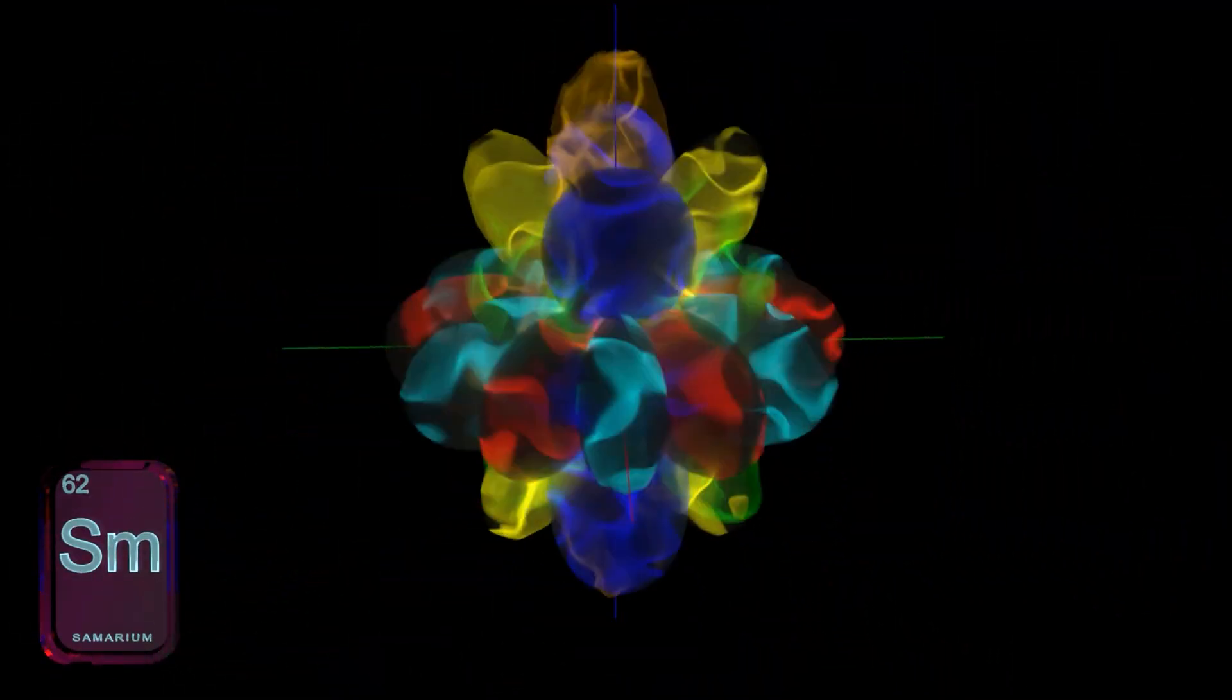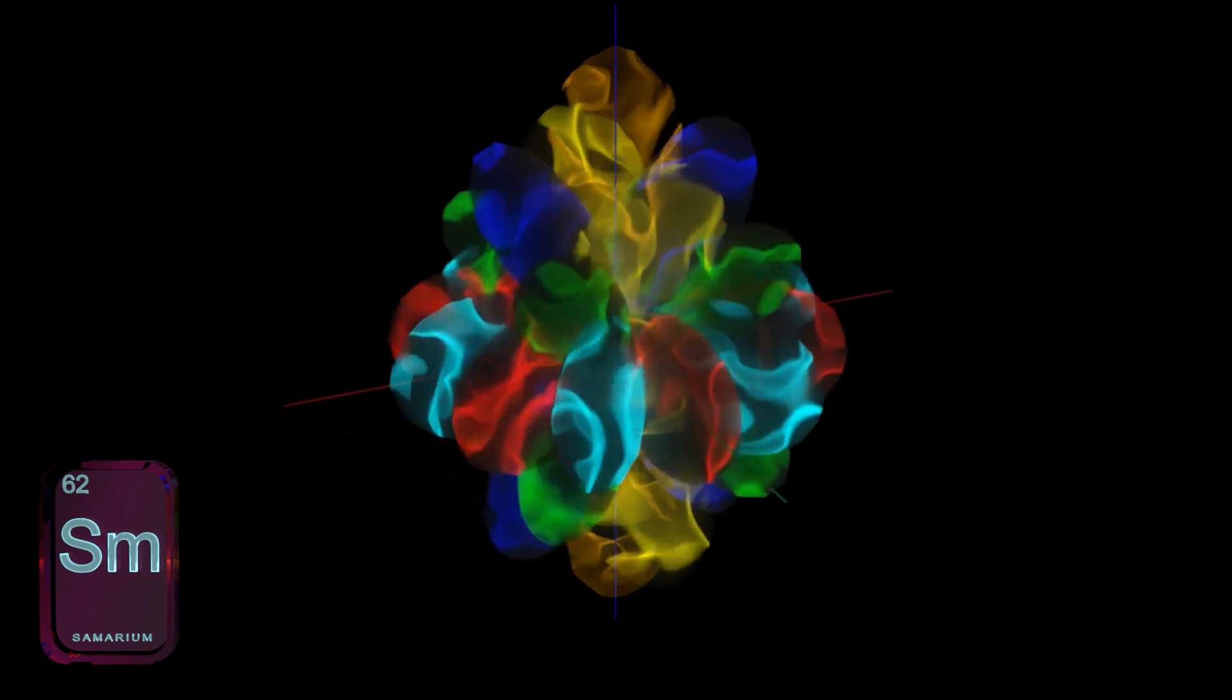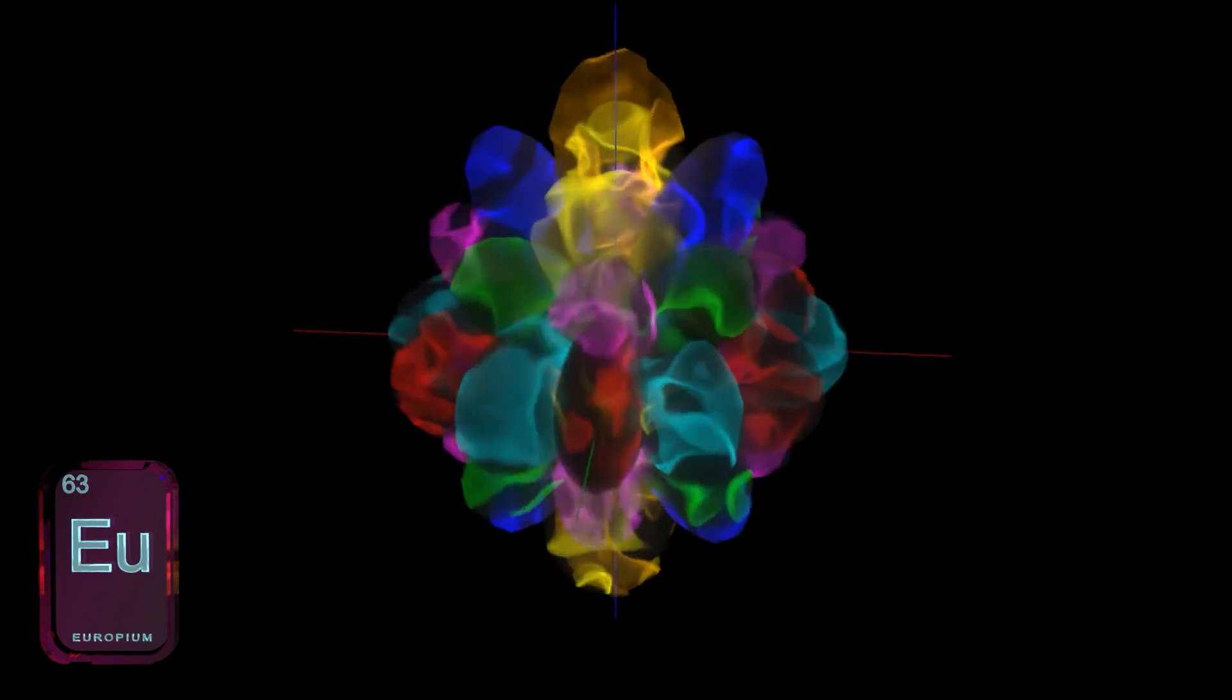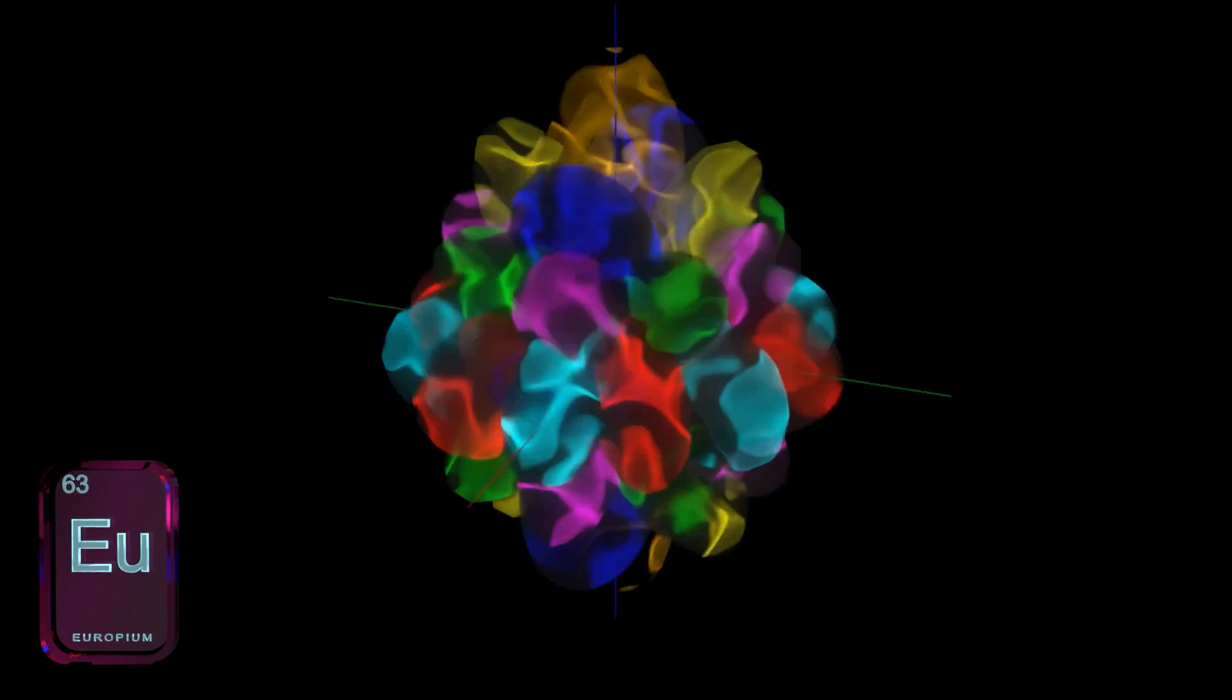Europium, 4f7. And here are the seven f orbitals, the 4f subshell, one electron in each of the seven different orbitals.